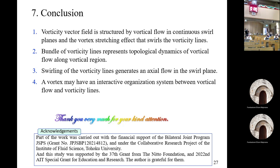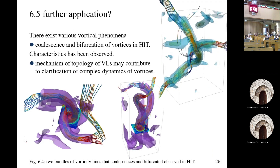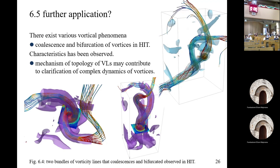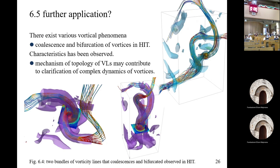Question: Thank you for an interesting talk. Can I ask a point of clarification? The measures you introduced — do you use these to identify vortex tubes in simulations, or do you find the vortex tubes first and then use the measures just to analyze them? Answer: In this turbulence, the vortical region is analyzed or identified using the sorority of the velocity field.